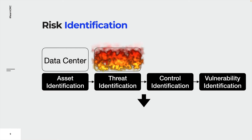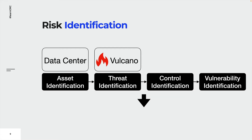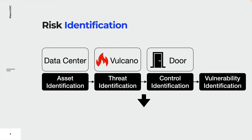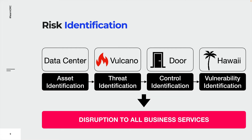What about existing controls? Controls are measures that modify risks. A front door is a physical control that protects the data center from intruders and therefore protects the confidentiality, availability, and integrity of information. But a door does not protect you from a volcano. As for vulnerabilities, the decisive vulnerability is the location of the island of Hawaii. The data center is within the critical radius of a volcano, so the volcano can exploit this vulnerability and we have a risk. The potential impact on the organization would be critical, as all business services would be disrupted.